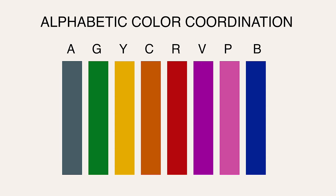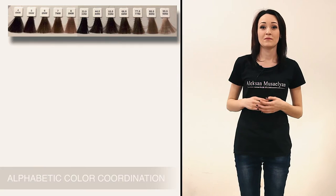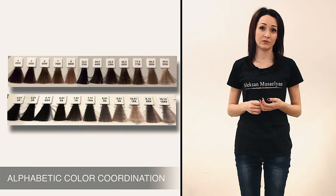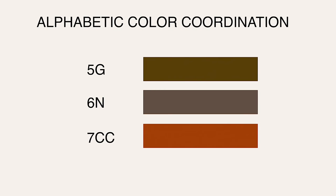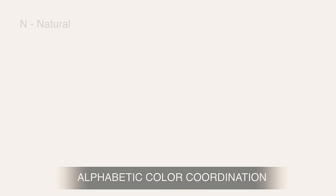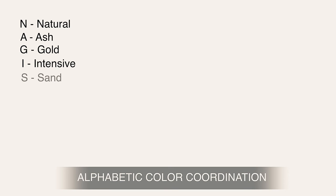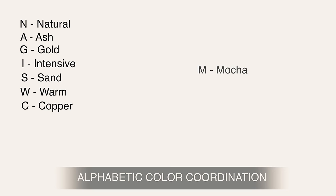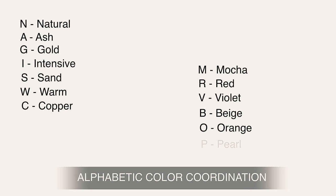When the manufacturer uses the alphabetic system, the color name is written in capital letters, usually in the native language of the brand or in English. When using literal color encoding, the separation character after the level of tone depth is not used at all. For example: 5G, 6N, 7CC. N = natural. A = ash. G = gold. I = intensive. S = sand. W = warm. C = copper. M = mocha. R = red. V = violet. B = beige or brown. O = orange. P = pearl. Due to this coding system, we can assign a number to any hue or decrypt it on the contrary.